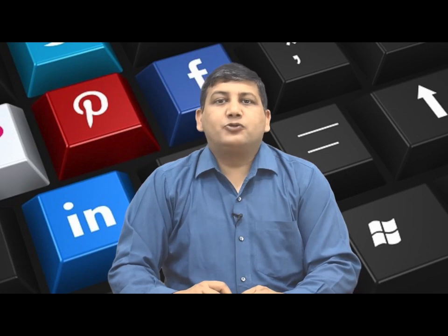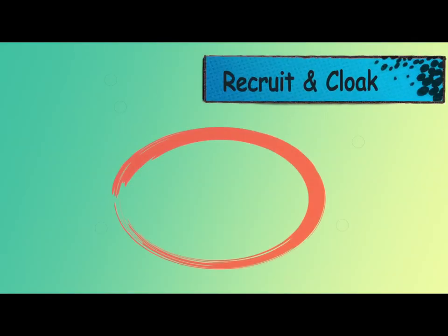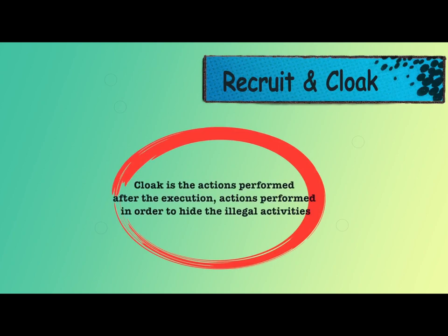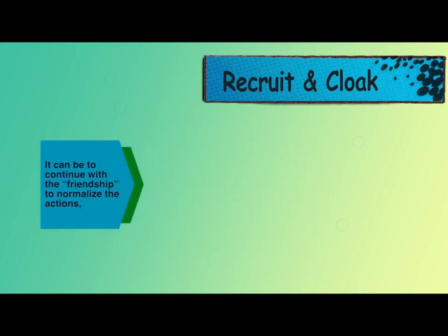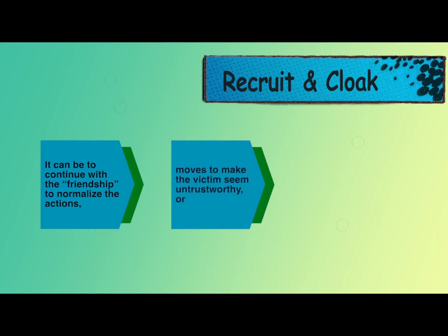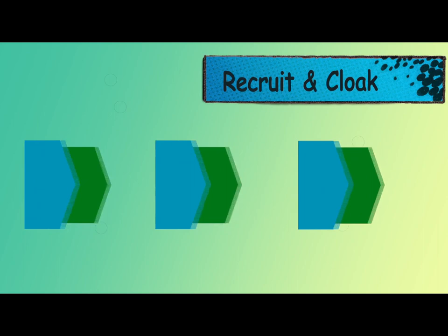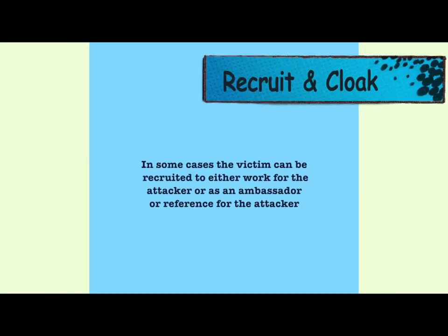The fifth step of the social engineering attack cycle is recruit and cloak. Cloak refers to actions performed after execution in order to hide illegal activities. This can include continuing the friendship to normalize actions, moves to make the victim seem untrustworthy, or more advanced techniques to hide the crime. In some cases, the victim can be recruited to work for the attacker or serve as an ambassador or reference.